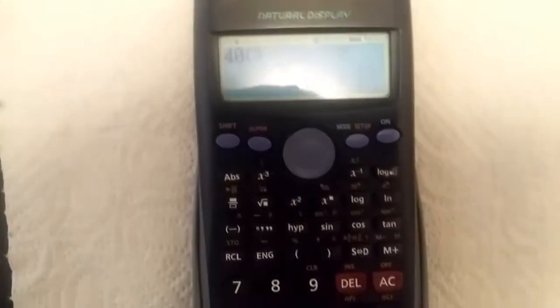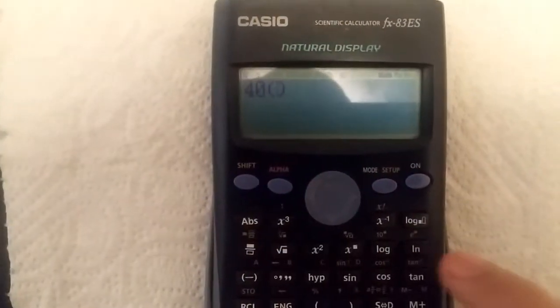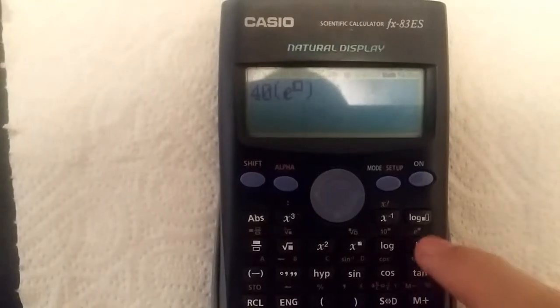Then go back. Now, you're going to use the exponential button, so you're going to find the E. The E is over here. You're going to press shift log. This will give you the E.